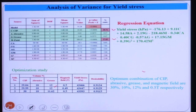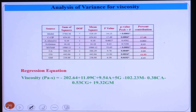The optimization study found that 30 percent CIP, 10 percent abrasive particles, 12 percent grease, and 0.5 Tesla magnetic field gives the highest yield stress of this fluid. A regression equation was developed to calculate yield stress. For the viscosity model ANOVA, magnetic field also has the highest contribution at 53.62 percent, followed by CIP at 17.68 percent, while abrasive and grease have less contribution.